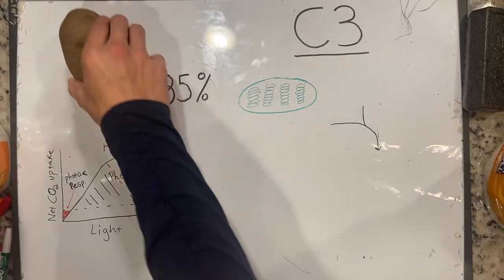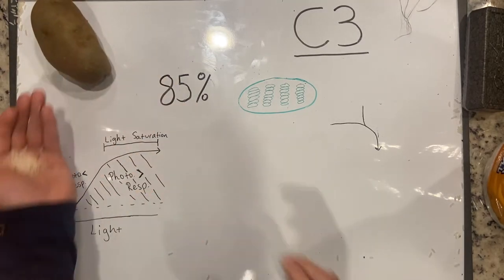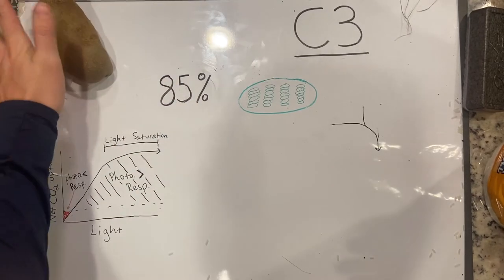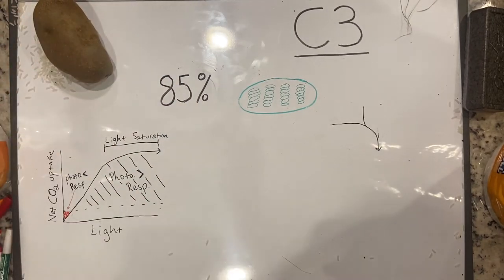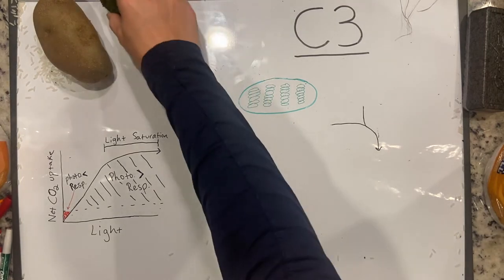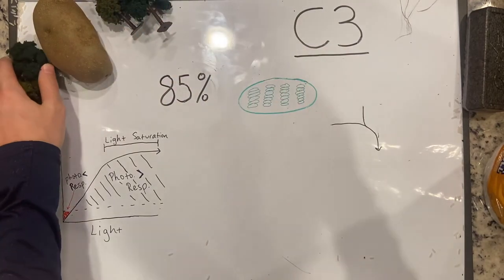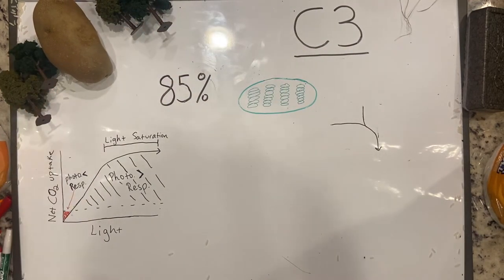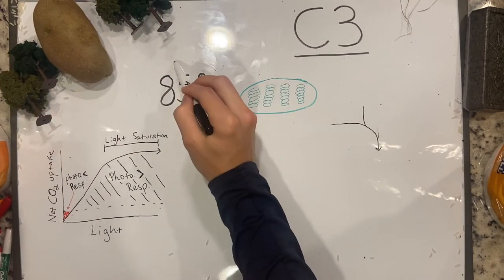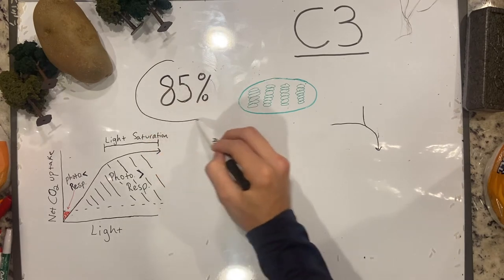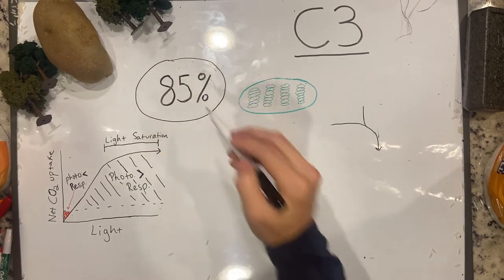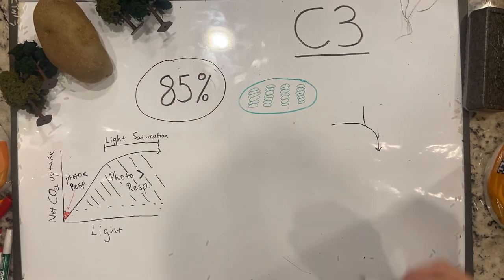The most prominent C3 plants are potatoes, wheat, rice, and cotton. C3 plants are also all trees. These plants are considered to be normal plants. In fact, 85% of Earth's plants are C3 plants.